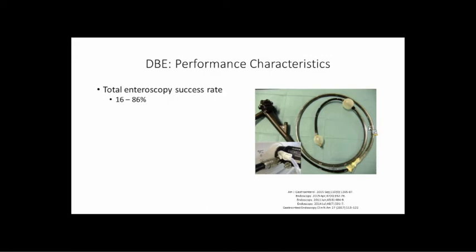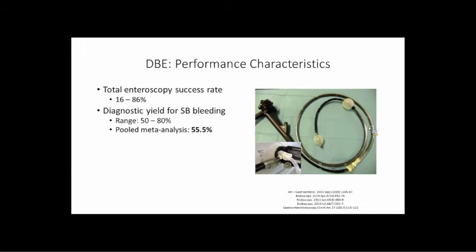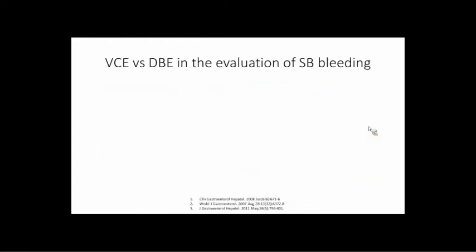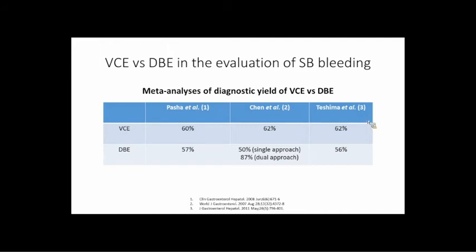Looking at the literature, the full enteroscopy rate — seeing the entire small bowel — is really all over the place, from 16% to 86%. Diagnostic yield ranges from 50% to 80%, with a pooled range of about 55%. Successful intervention can be performed 40 to 70% of the time. Complications do occur — for diagnostic enteroscopy the complication rate is about 1%; if you add therapy, it can be as high as 3 to 4%. Mortality is low.